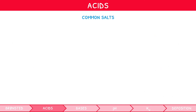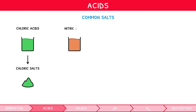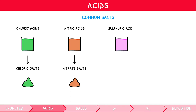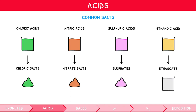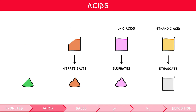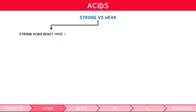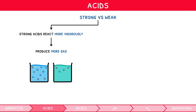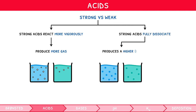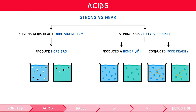You need to recall the common salts formed: hydrochloric acid forms chloride salts, nitric acid forms nitrate salts, sulfuric acid forms sulfates, and ethanoic acid forms ethanoates. Strong acids react more vigorously, producing more gas, i.e. bubbles. Since they also fully dissociate, they produce a higher concentration of H+ ions in solution, and so will conduct electricity more readily when compared to weak acids.